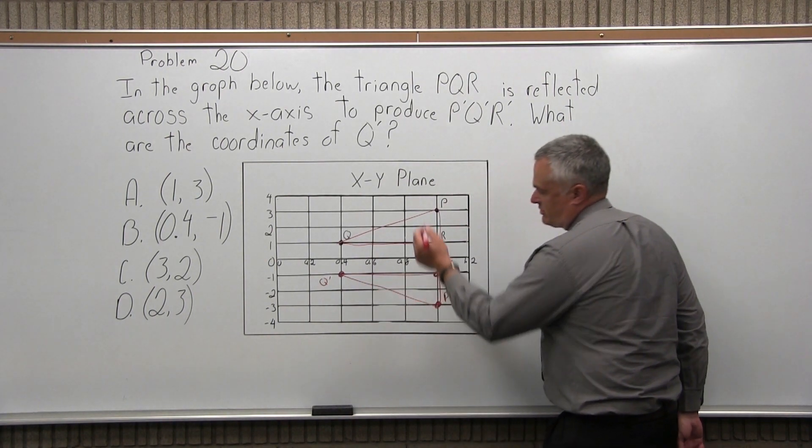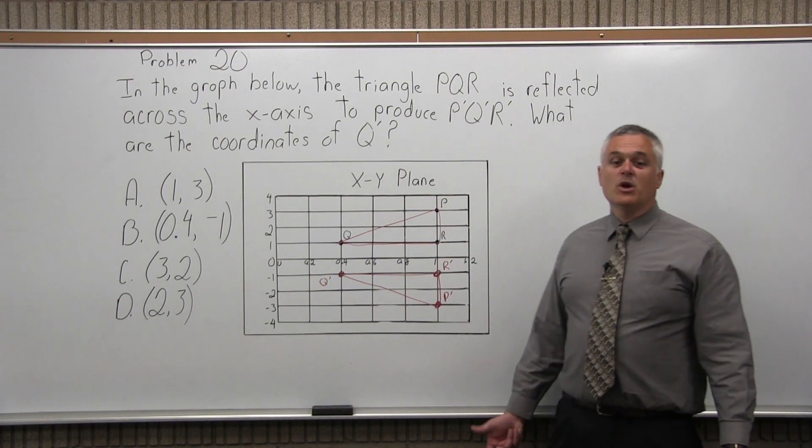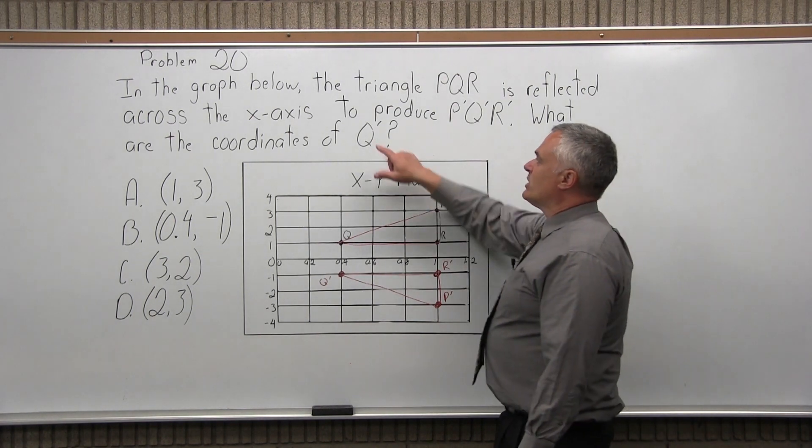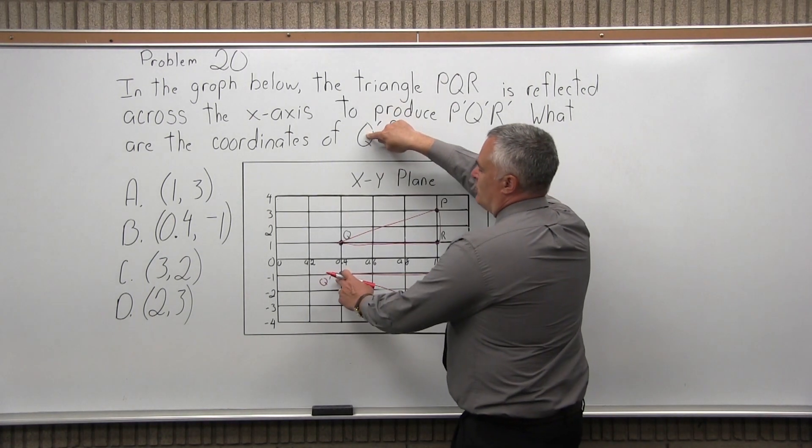So again, as the name implies, it looks like it's reflected in a mirror. Now they're not even interested in the whole triangle. The question is, what are the coordinates of Q prime?